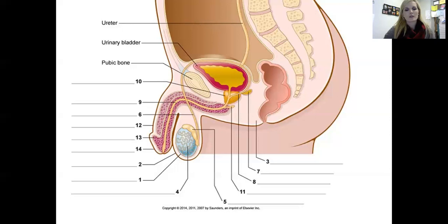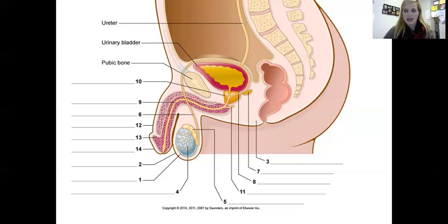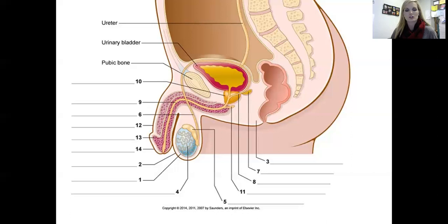Number four is pointing to the little tubules within the testes — it is here that sperm cells are going to be produced. These are called the seminiferous tubules — S-E-M-I-N-I-F-E-R-O-U-S tubules. In between those seminiferous tubules, we have interstitial cells where testosterone is being created.